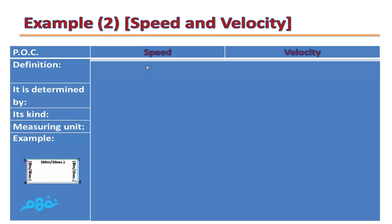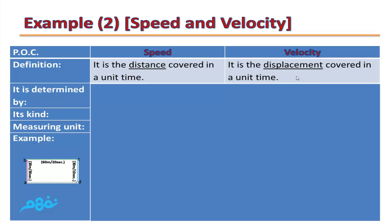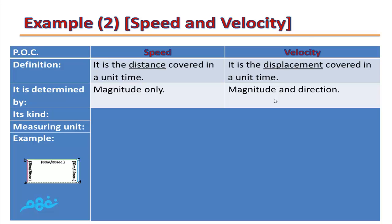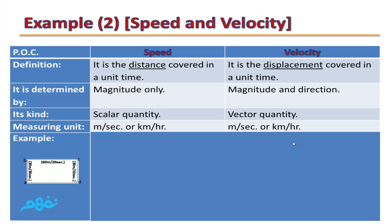Let's compare Speed and Velocity. Speed is scalar; Velocity is a vector. Speed is the distance covered in a unit of time. Velocity uses the same definition but replaces the word 'distance' with 'displacement' — it is the displacement covered in a unit of time. To determine speed, we need its magnitude only. For velocity, we need its magnitude and its direction. Speed is a scalar physical quantity; velocity is a vector physical quantity. Both share the same units: meters per second or kilometers per hour.